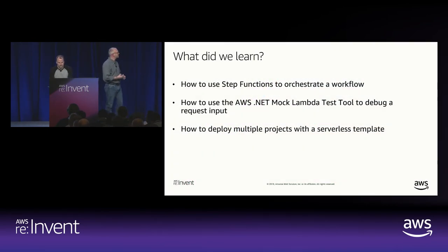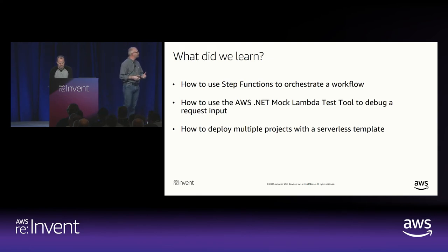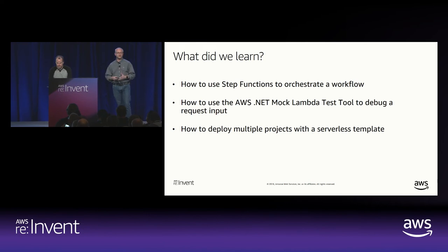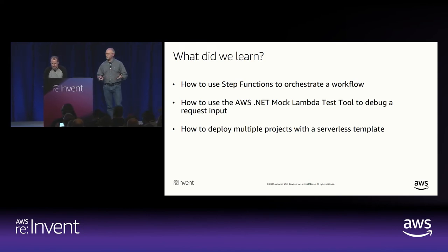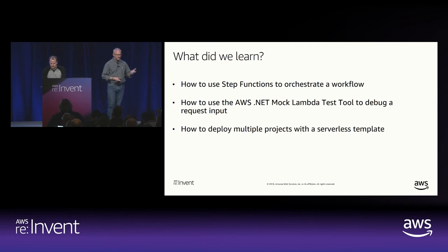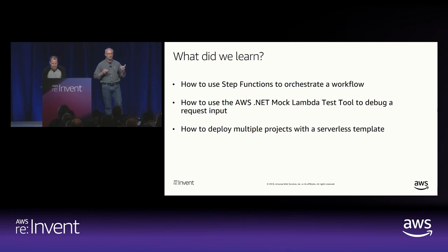So that was serverless subsystem number two — the mosaic renderer. We saw how to use Step Functions using a mix of C# and F# to orchestrate a workflow. We saw the .NET mock Lambda test tool used to debug request input — multiple ways to get input into the tool: using a sample request, the actual request your Lambda function received, or the dead letter queue data from the first demo. And we saw the new support for deploying multiple projects using relative paths in your serverless template.